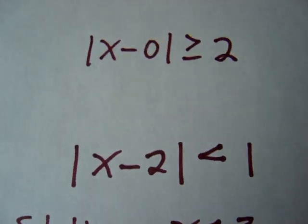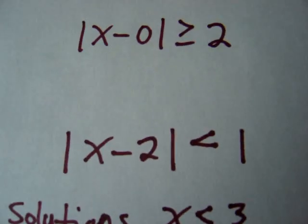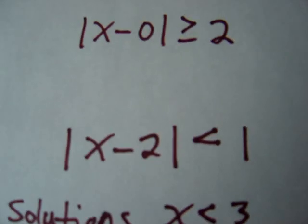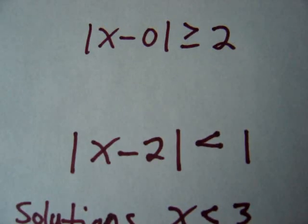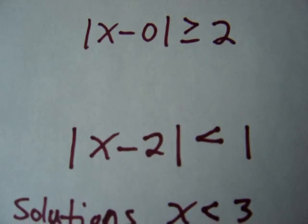However, if I write it like this, this means that the distance from 2, because we're subtracting, it's the difference, the difference between a number and 2, that's the distance. So now, it's the distance from 2 must be less than 1.